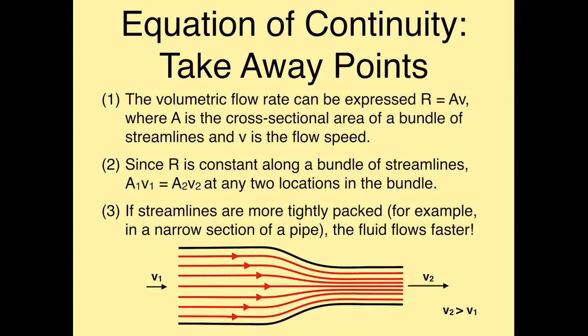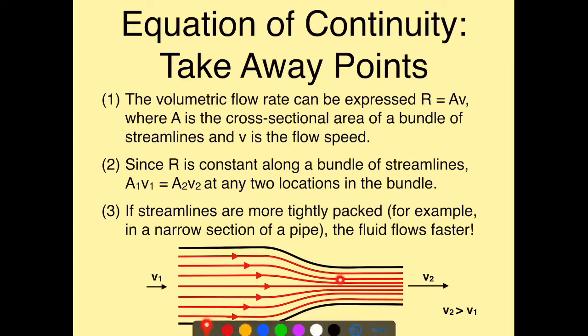An analogy for this is traffic. Imagine a highway with many lanes open and cars in each lane. If we close some lanes — say from five lanes to three — we could keep the traffic flow the same if everyone agreed to drive faster. That's exactly what's happening in the pipe: we narrow the cross-sectional area and the speed increases to maintain the same flow rate.